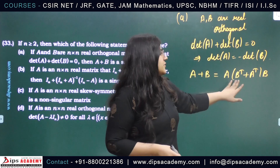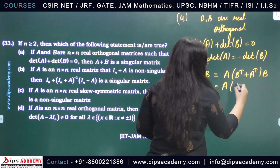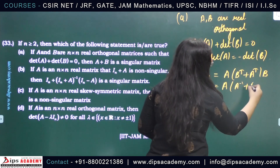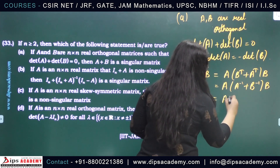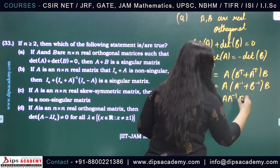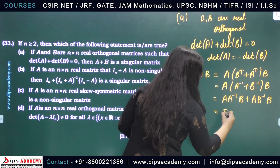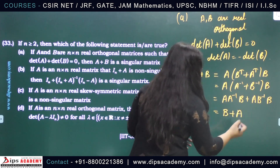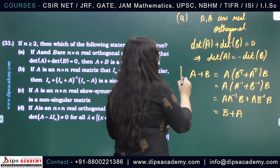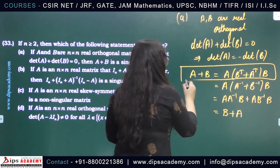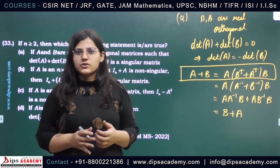If we substitute B^T with B^{-1} and A^T with A^{-1}, we can also commute this. So this gives A^{-1} + B^{-1} times B, which simplifies to A^{-1}B + A B^{-1}B, which is B + A, and A + B equals B + A. So these two values are equal. Using this, we will try to find the determinant of A + B, because we need to determine whether A + B is a singular matrix or not.